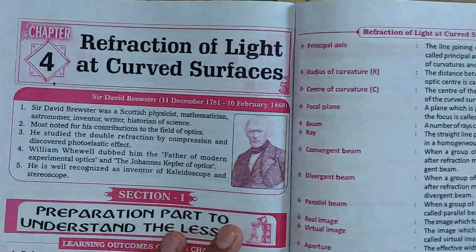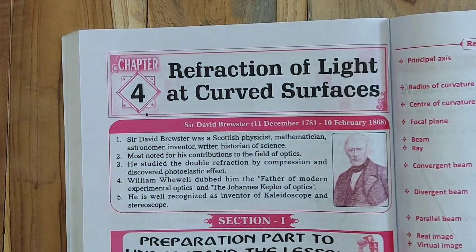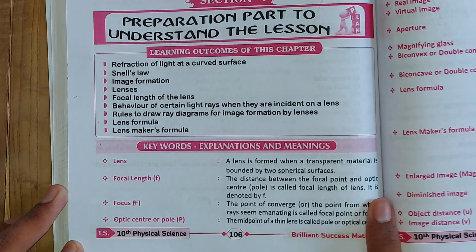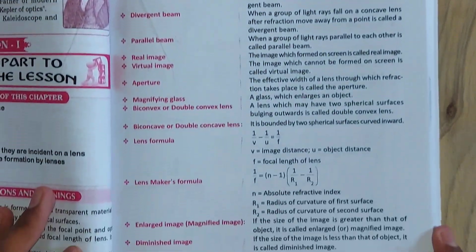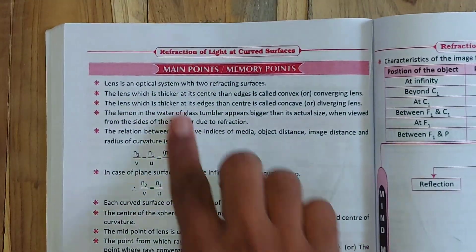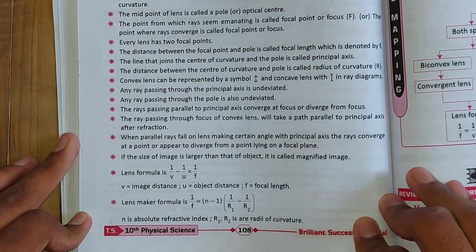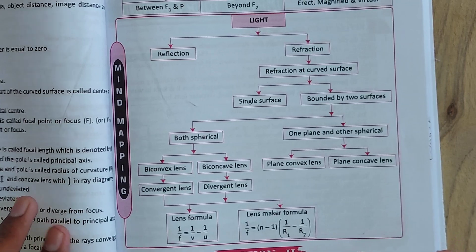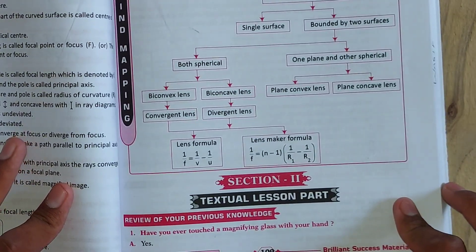You can see here we have page 106. This is Chapter 4: Reflection of Light at Curved Surfaces. First we'll see keywords, explanation, and meanings. These keywords continue into the next page as well. Then we move to Mind Mapping main points — you can see the memory points listed here, continuing up to this point, followed by the mind map itself.